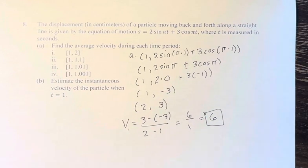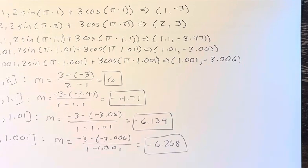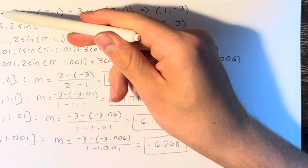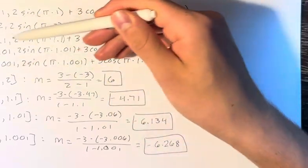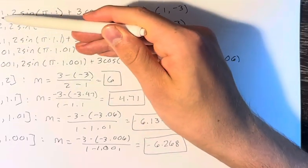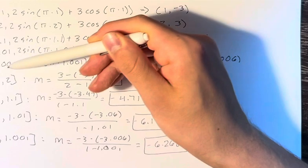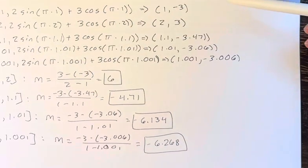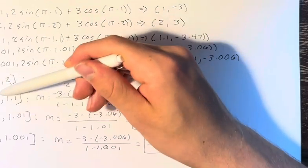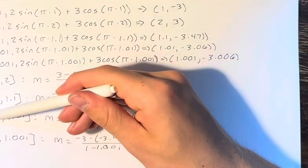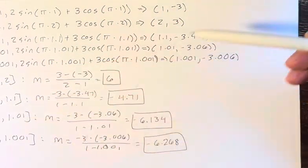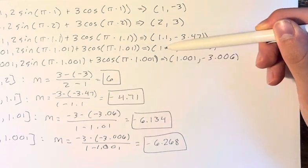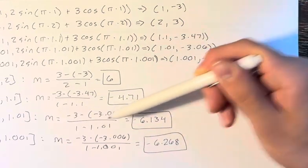So here I have done the calculations, and as you can see, we have these points that are calculated by taking these x values and plugging them into the equation. So we have t = 1, 1.1, 1.01, and 1.001, and I've output all these points. Then I take the points associated with these intervals, so for example 1 and 1.01 gives us points (1, -3) and (1.01, -3.06).